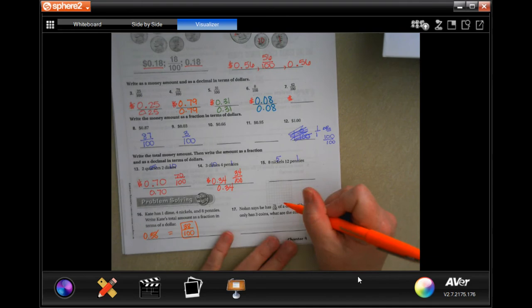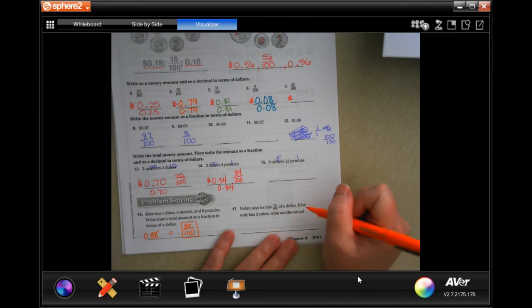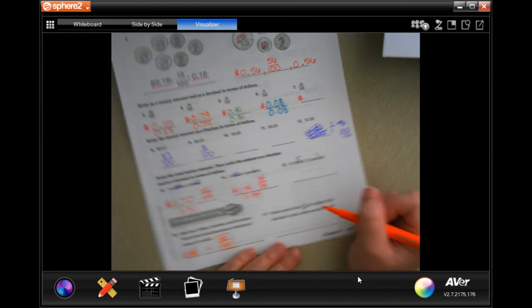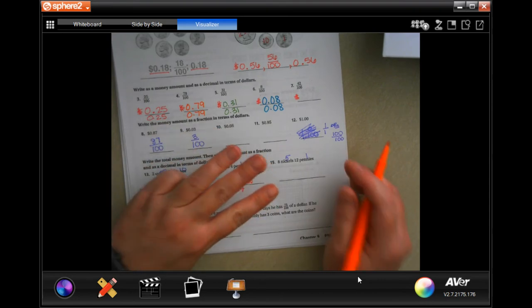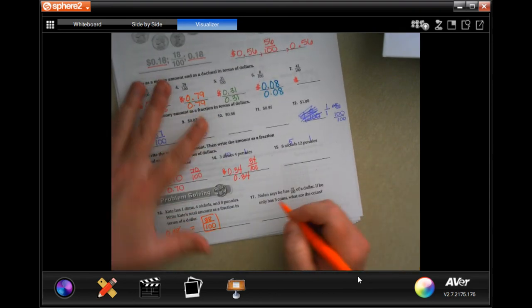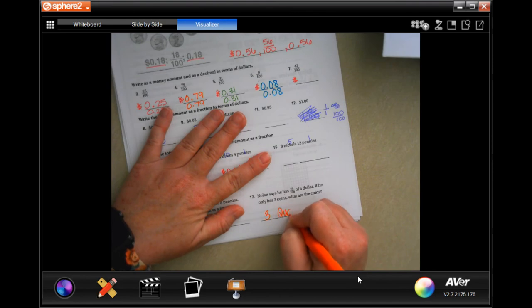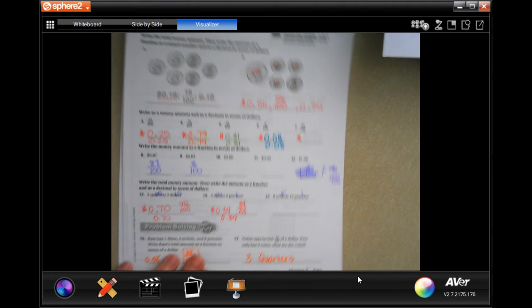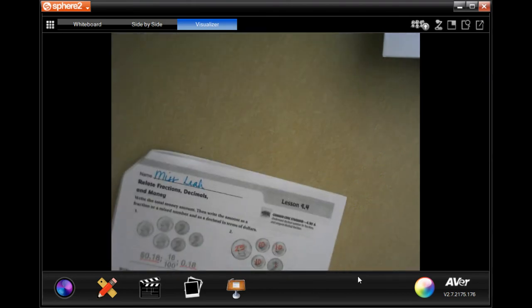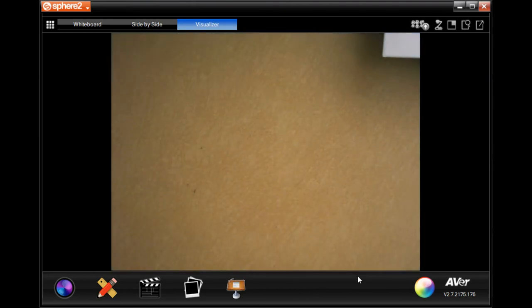Nolan says he has 75 hundredths of a dollar. If he only has three coins, what are the coins? Well, the only three coins that it could be are three quarters. So, three quarters. So, write that on down.